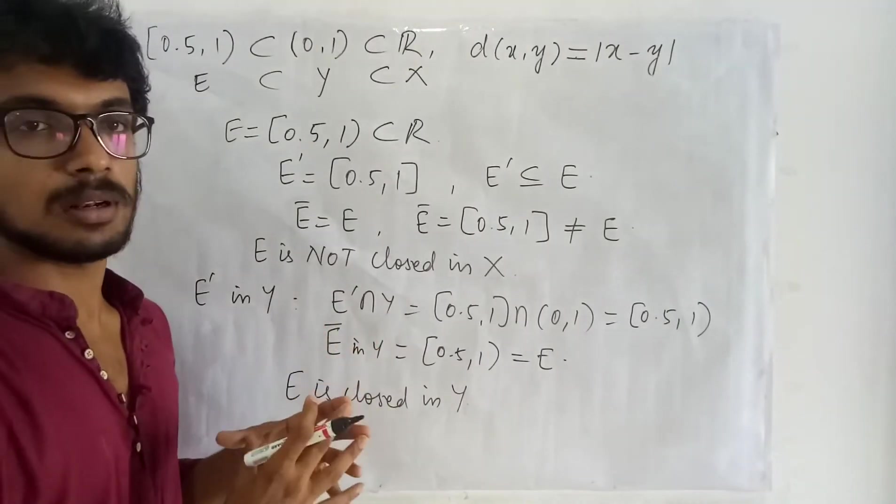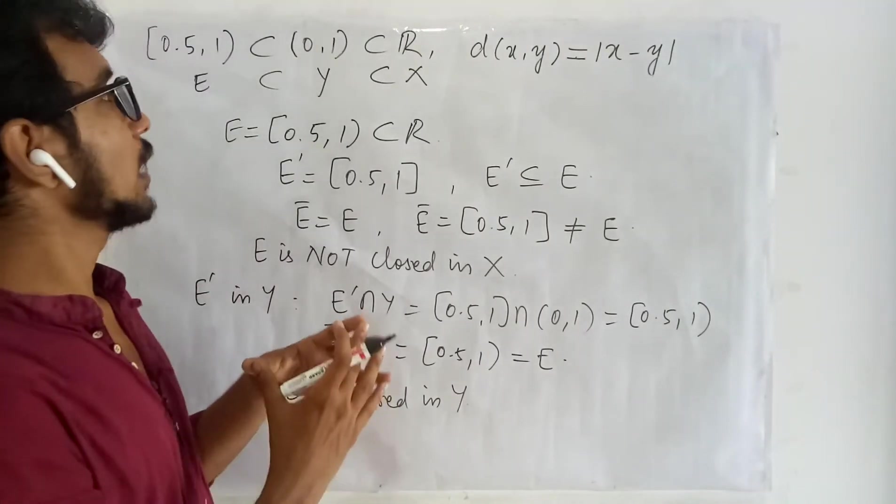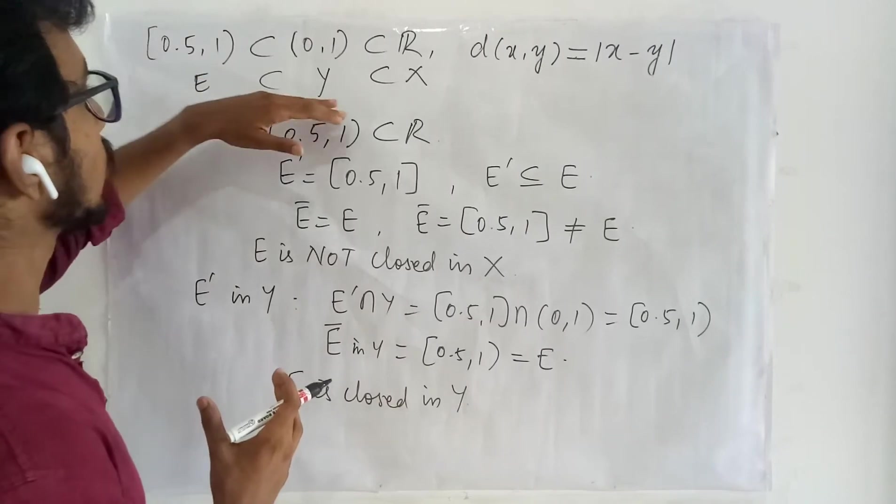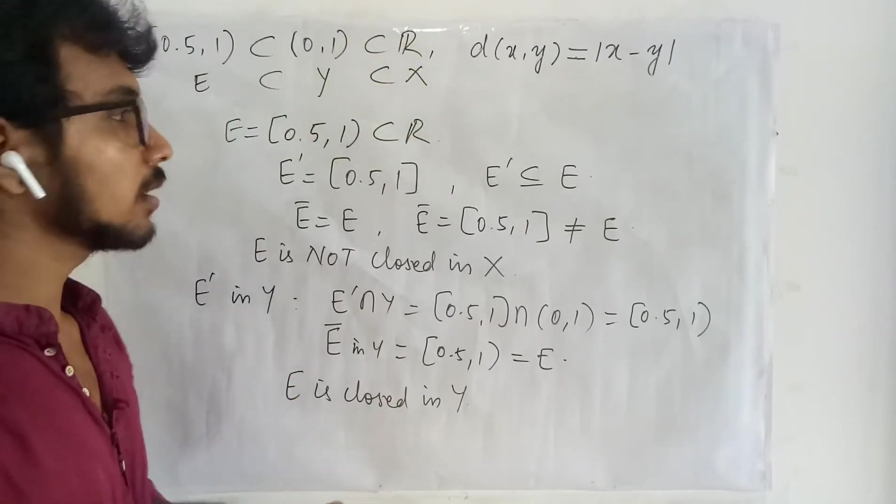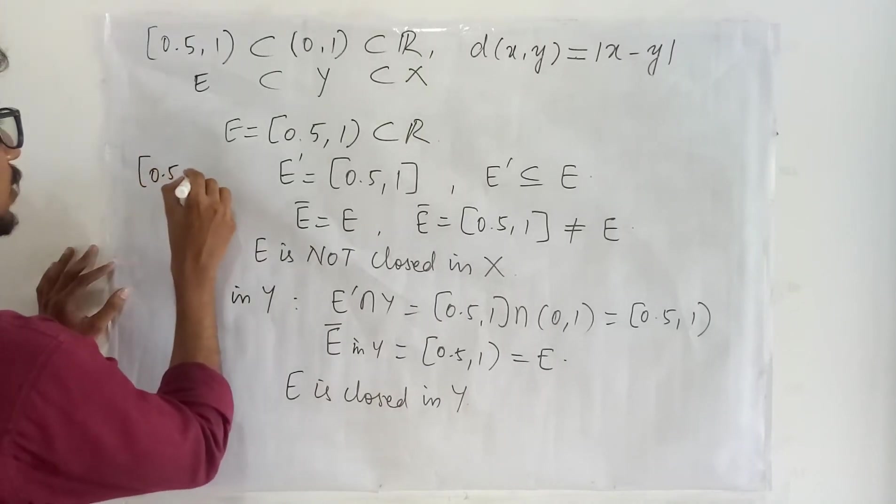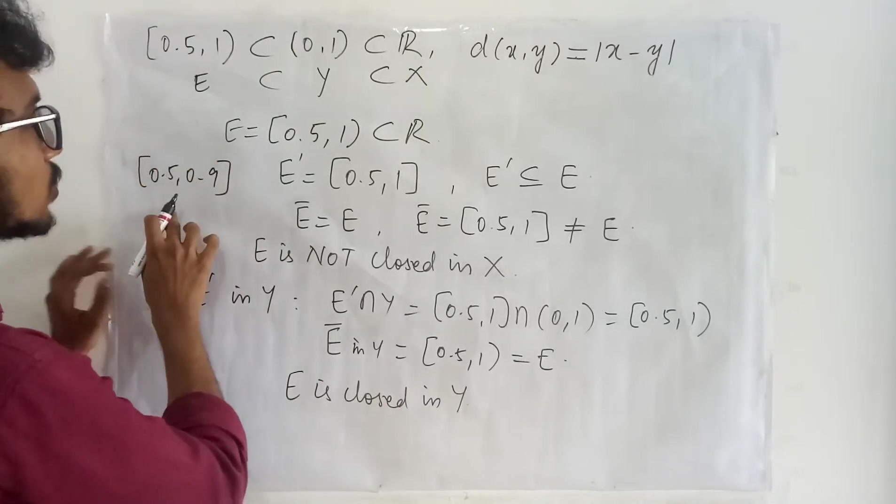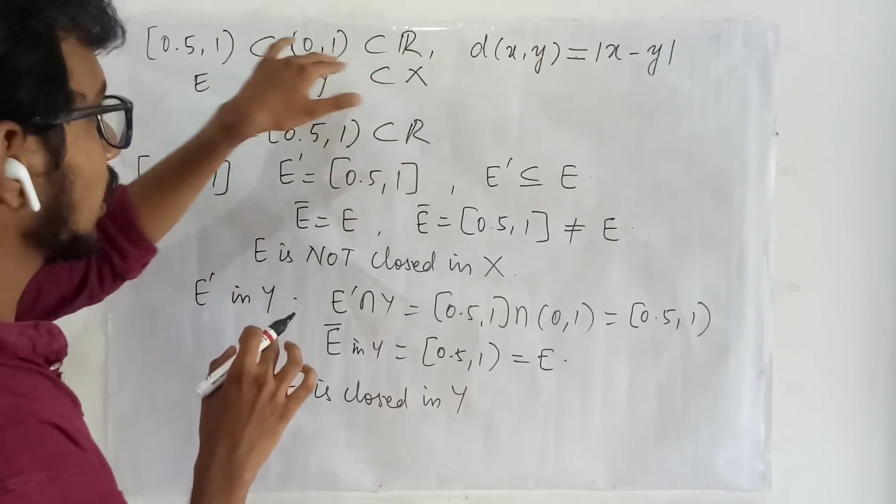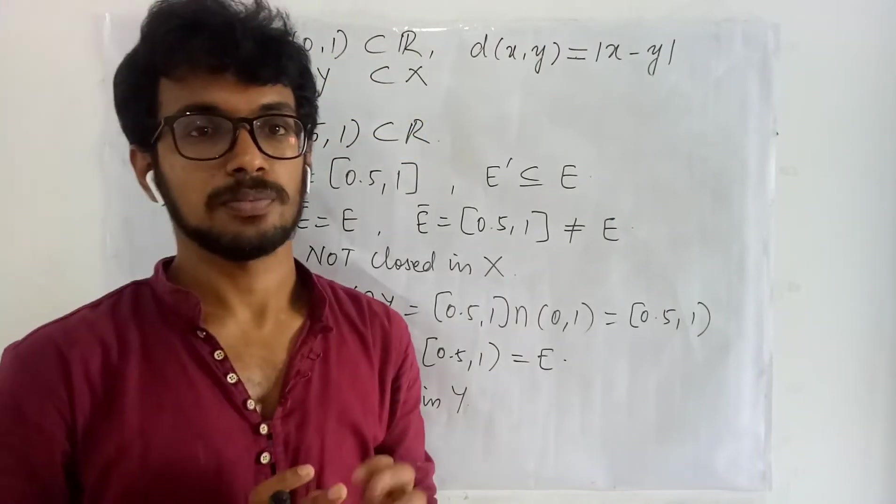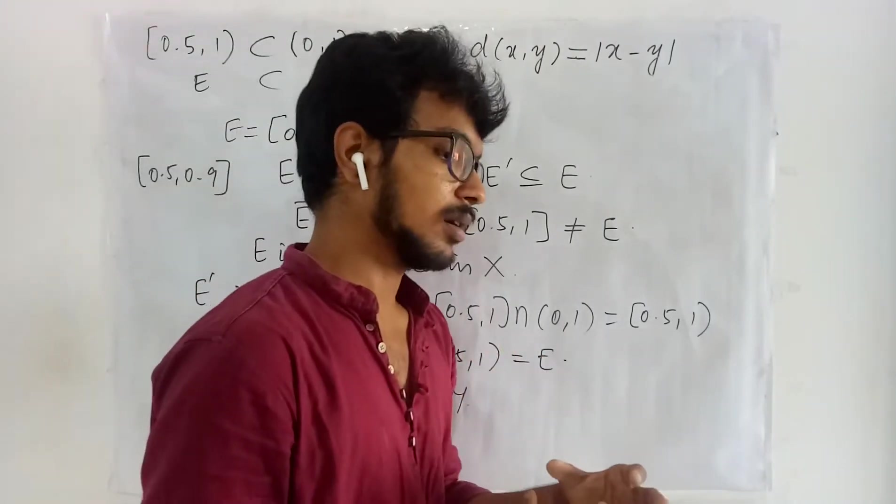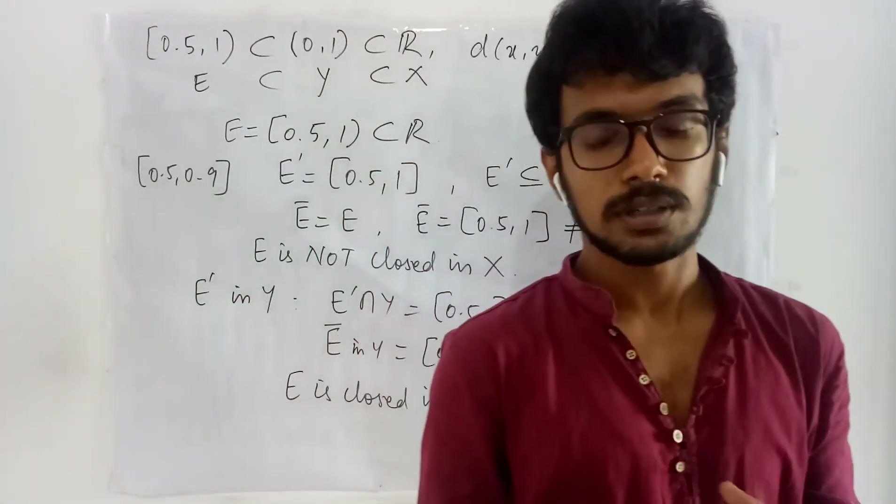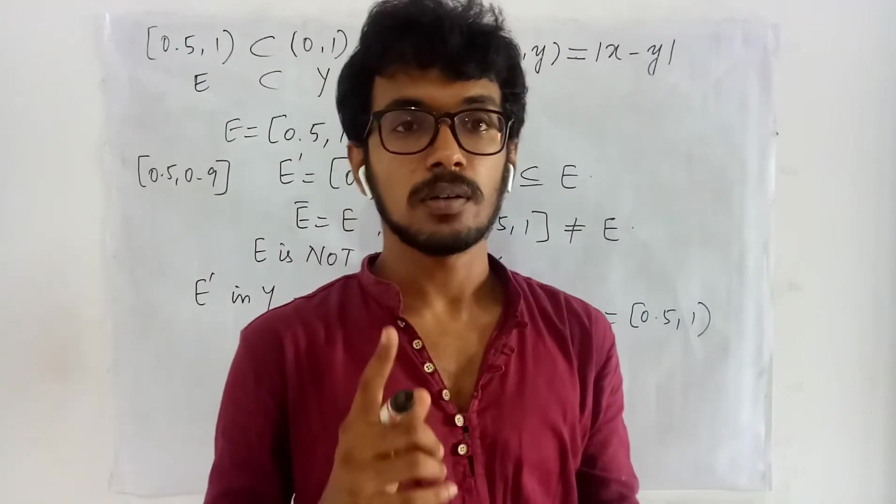So this example gives you an idea that a set closed in Y need not be closed in X. Sometimes suppose if you take this to be your E which is closed in X as well as in Y too. Now this might have given you the idea of relative closedness.